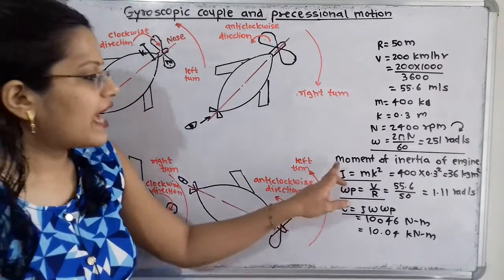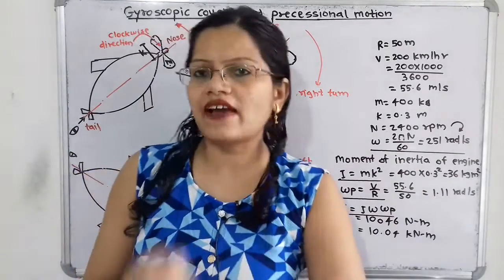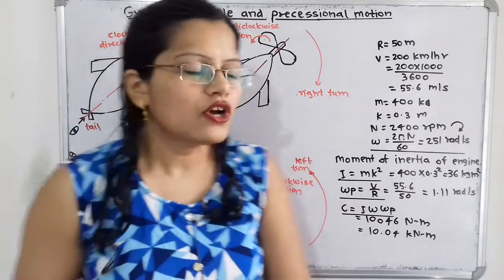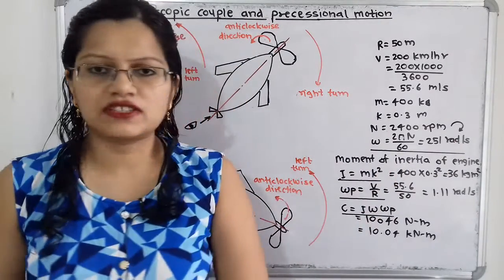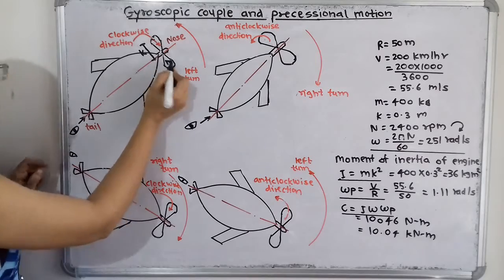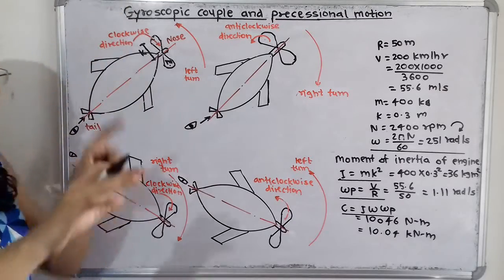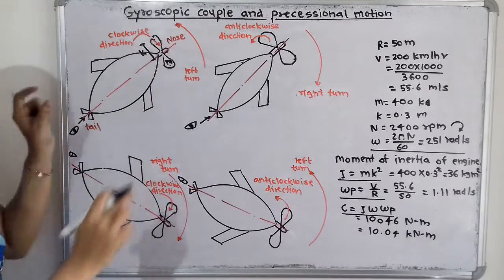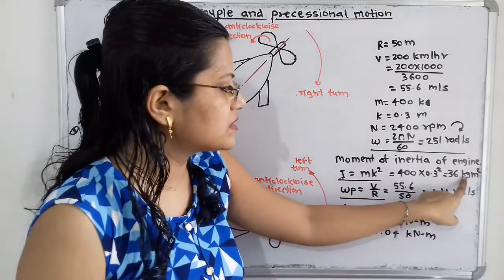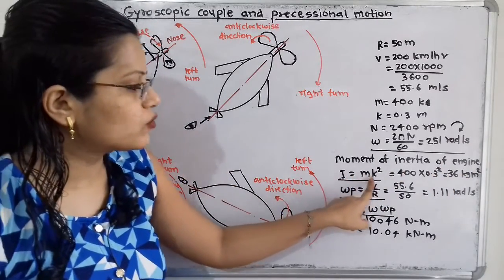Next, we have to find out the moment of inertia of the engine. This engine has some mass, and for that mass there is inertia — resistance to motion. The formula is I = m × k². Here m is the mass of the engine and k is the radius of gyration. So I = 400 × (0.3)² = 36 kg·m².